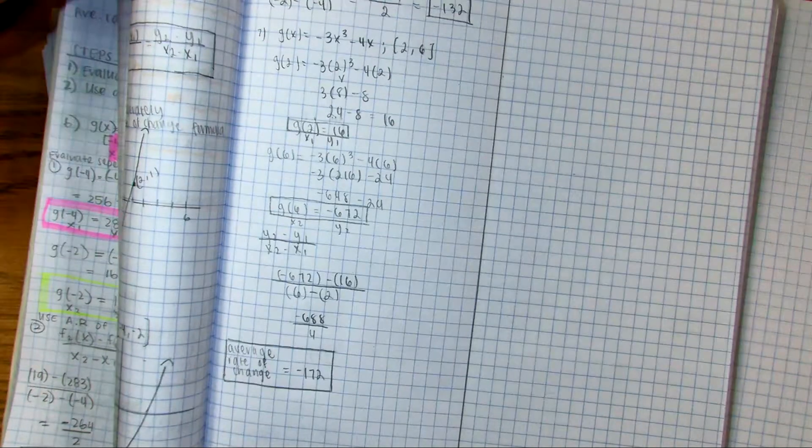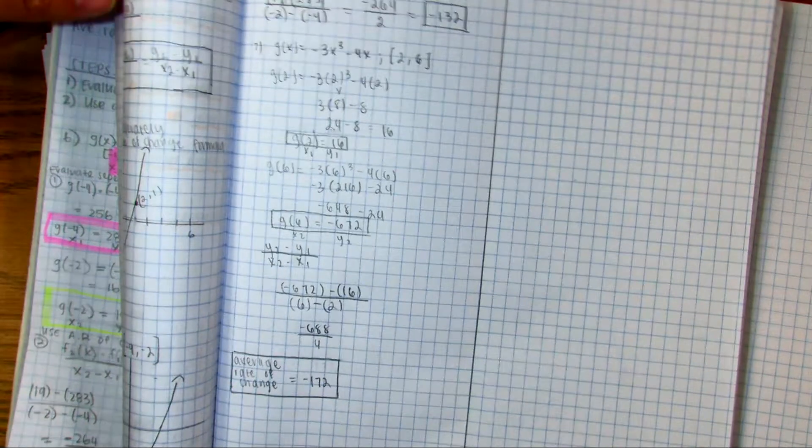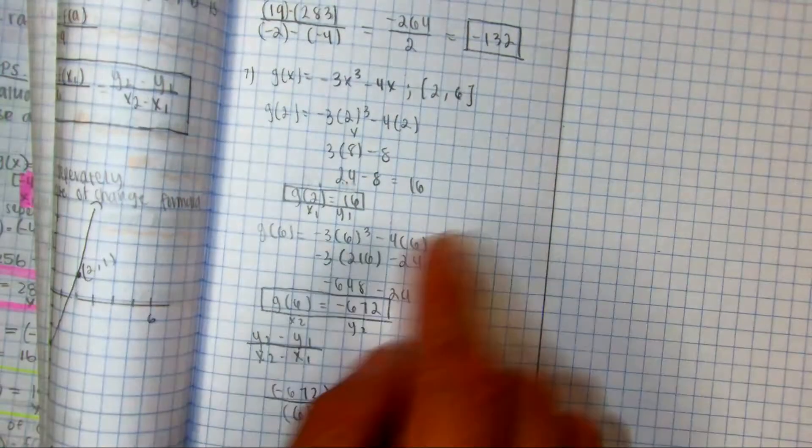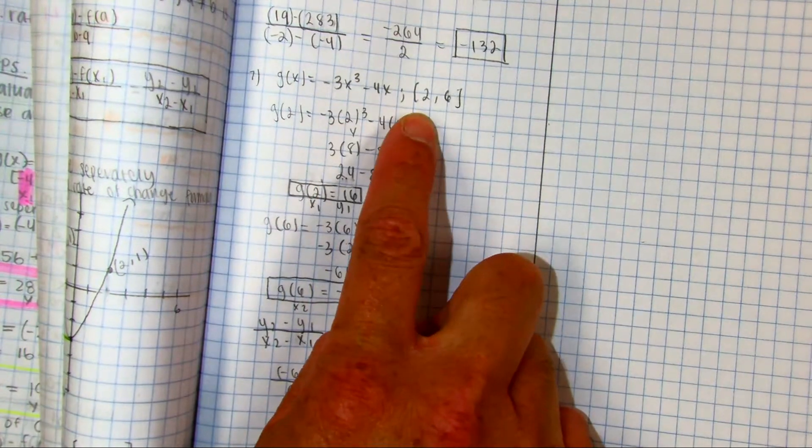You guys were asked to do question number 7: negative 3x cubed minus 4x, and find the average rate of change between the interval of 2 to 6.